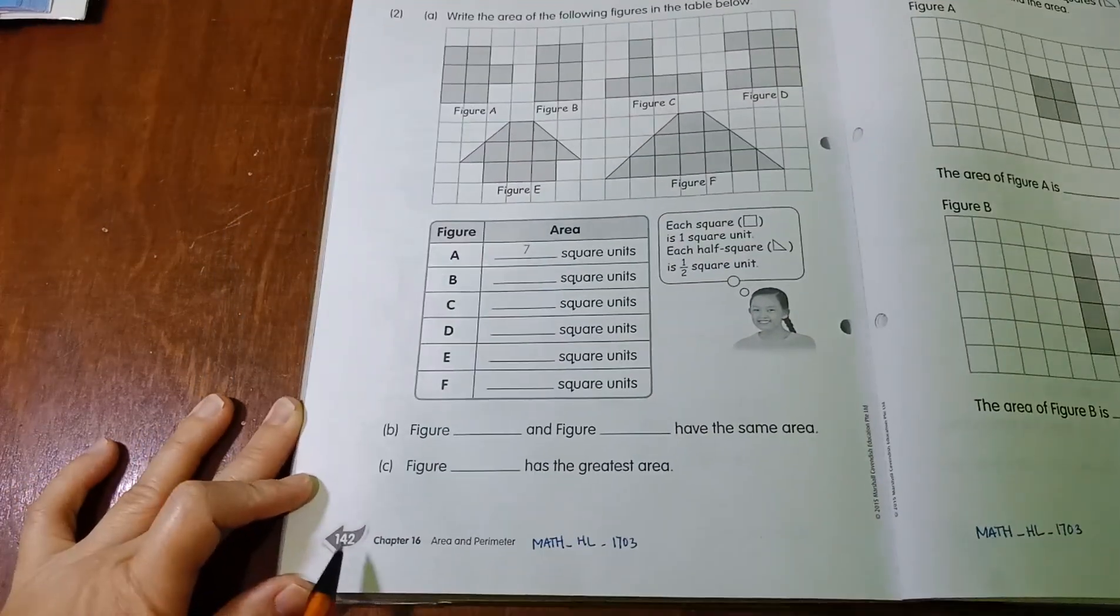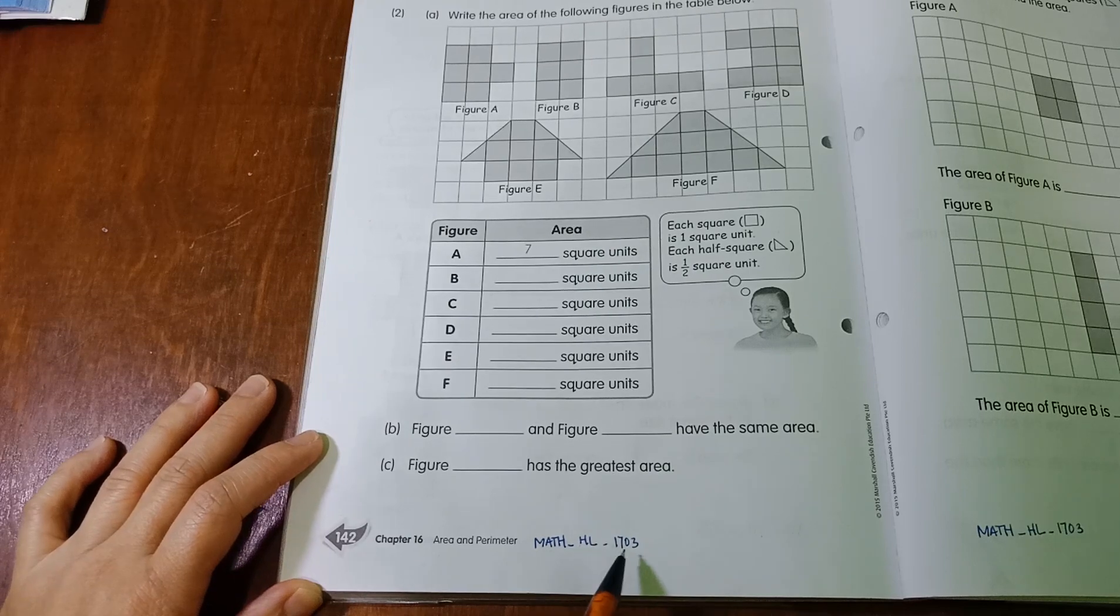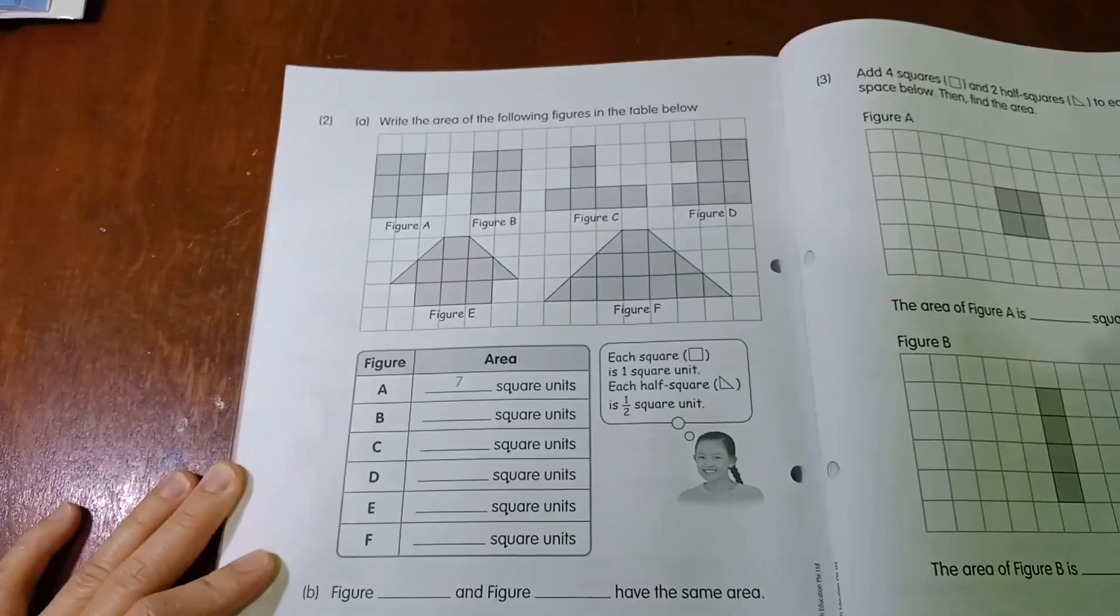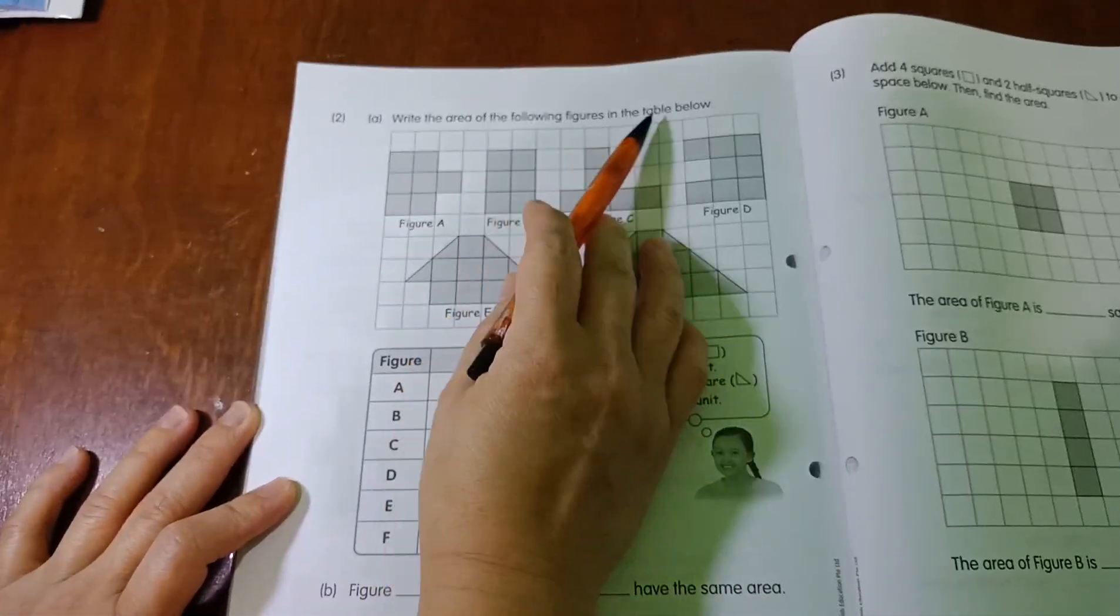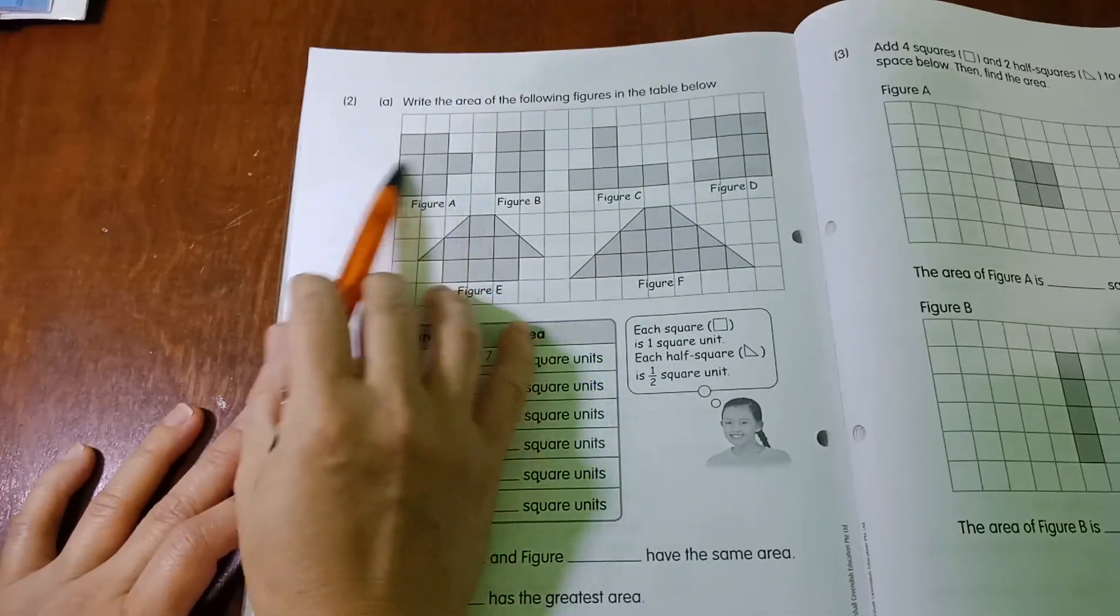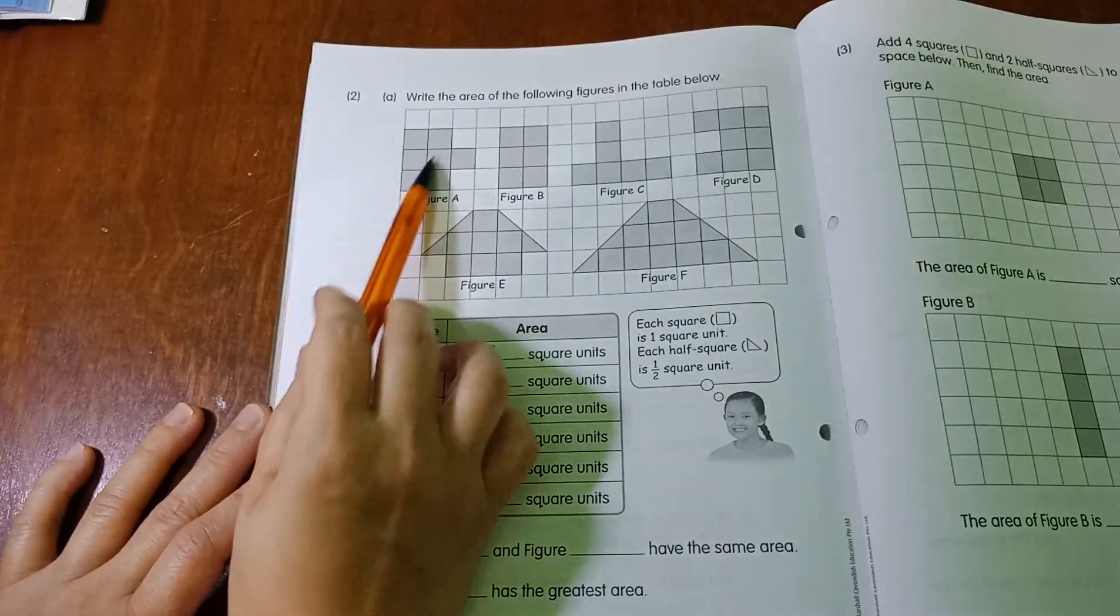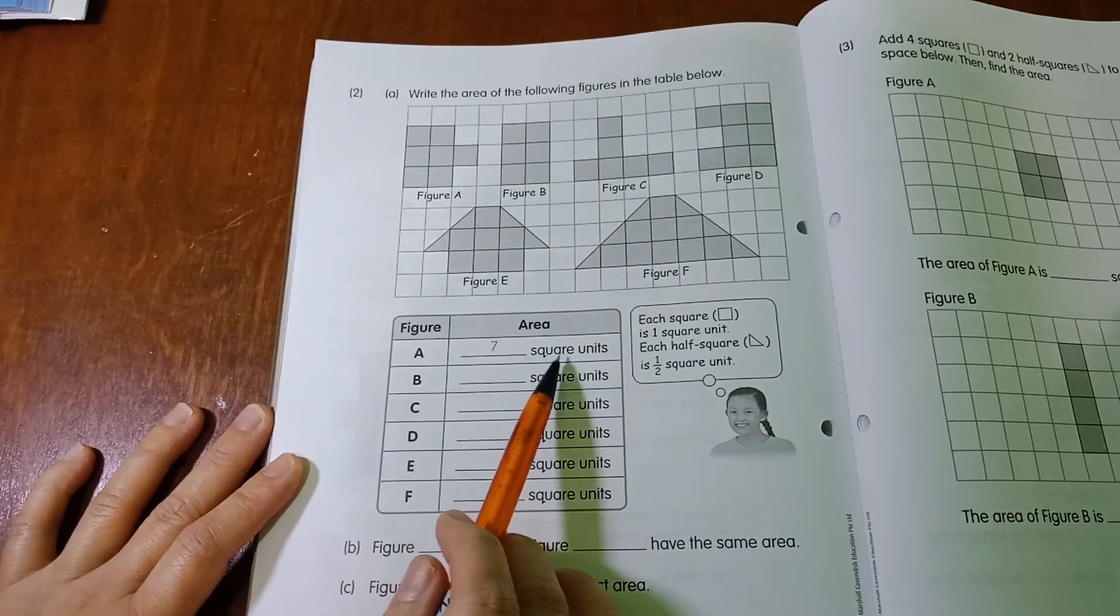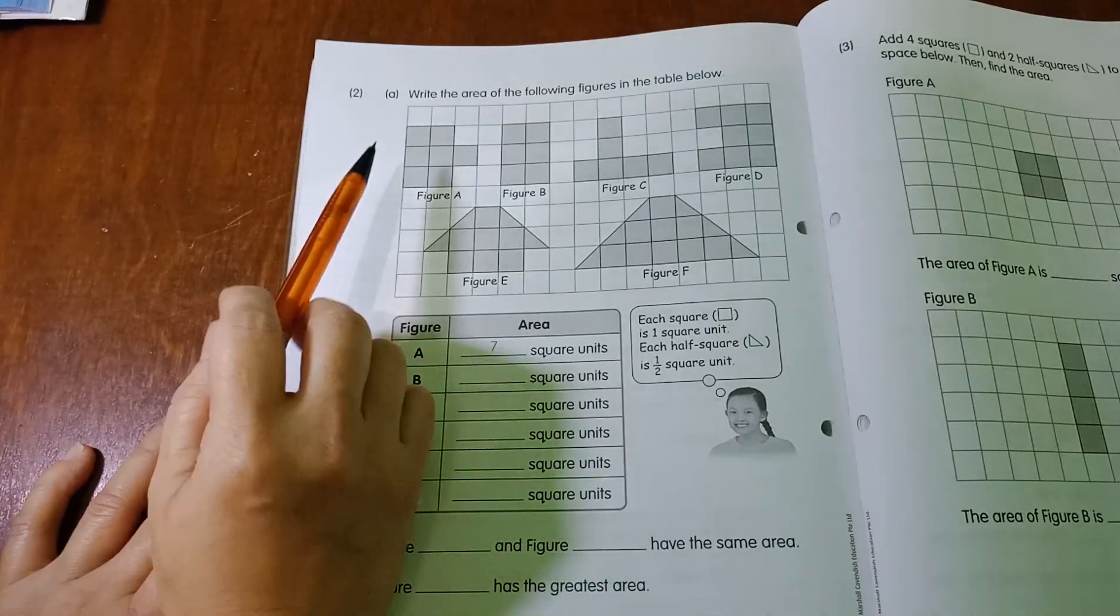Next to the next page, page 142, which is Math's home learning, was sent 17 March. Okay, let's check it out. So write the area of the following figures in the table below. So you count how many area, what is area? Area is something that covering the shape or the figure. For example, this is A, there are 7 square units. Why is it 7? Come on, let's check it out.